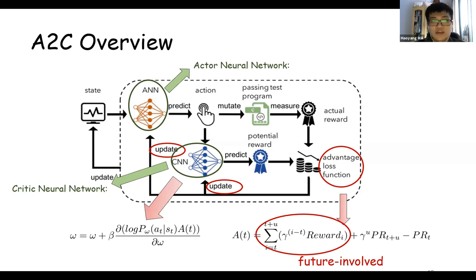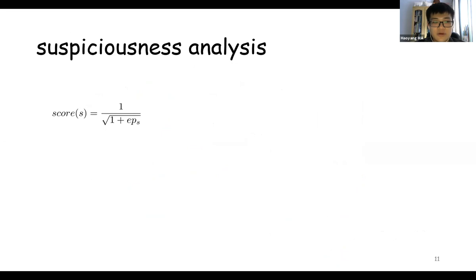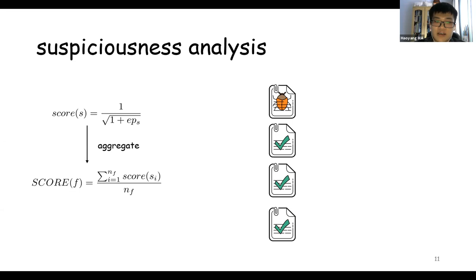Now we have used our reinforcement learning algorithm to generate many passing test programs. The coverage information of these programs will give us some hints to calculate the suspiciousness of each involved compiler file. So here's our suspiciousness analysis. We calculate the suspiciousness score of statement s by this formula. By aggregation, we can calculate the score of f. Using this formula, we can generate a ranking list by using this score of f in descending order. The bug-contained file may stay at the top of the ranking list, and it will be easy for developers to find the bug.